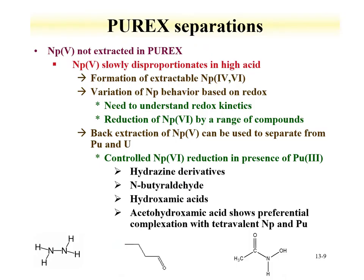The importance of neptunium redox speciation in the Purex separation has already been discussed. Again, neptunium-5 is not extracted; however, neptunium-5 can slowly disproportionate in high acid — one of the conditions of the Purex process — forming extractable neptunium-4 and neptunium-6 species. Studies have been performed to understand this redox behavior, and reduction of neptunium-6 by a range of compounds has been explored. One of these is acetohydroxamic acid, which is preferentially shown to complex with tetravalent species including tetravalent neptunium and plutonium, and this has been used to help control behavior in proposed separation systems.